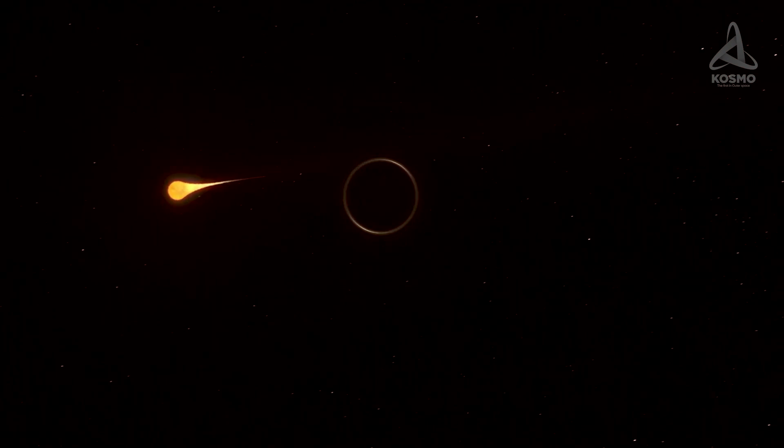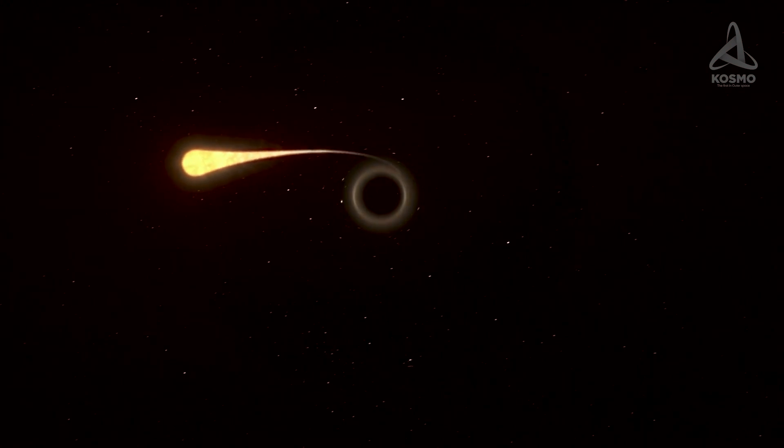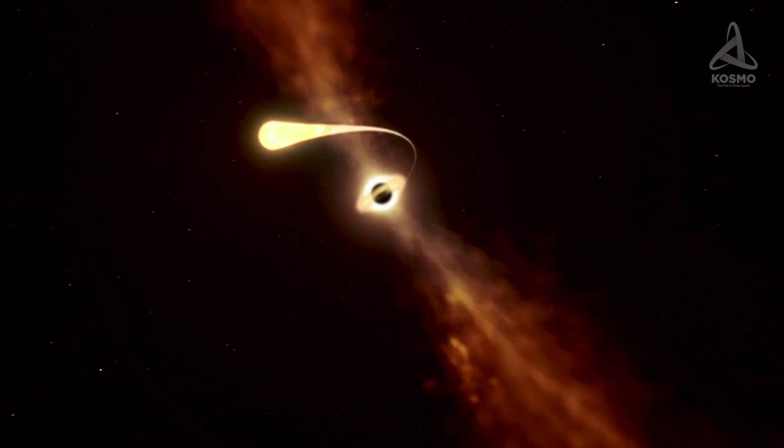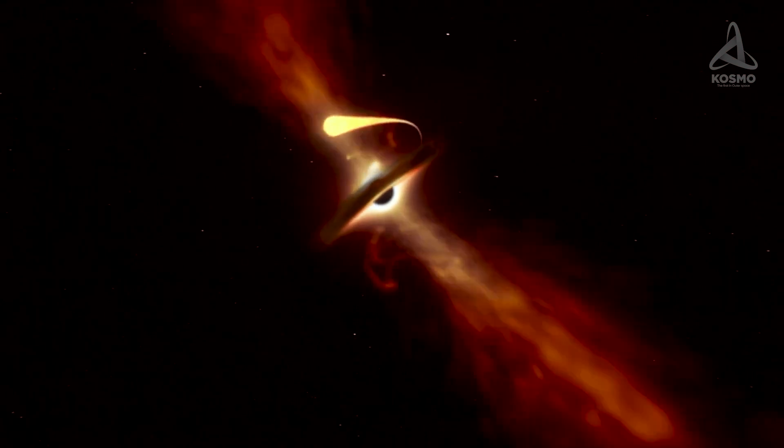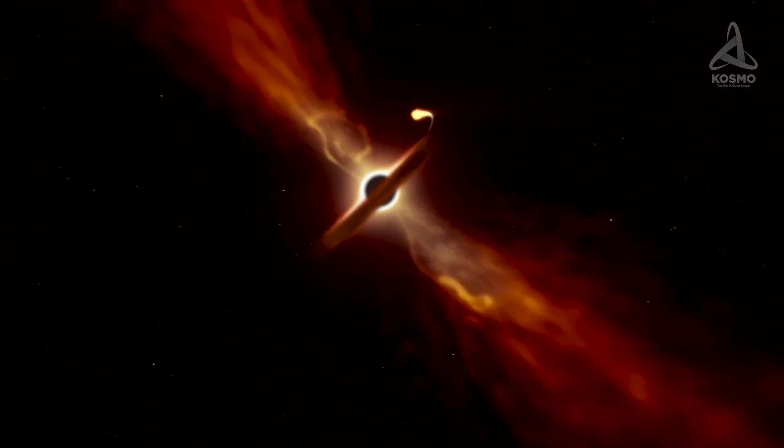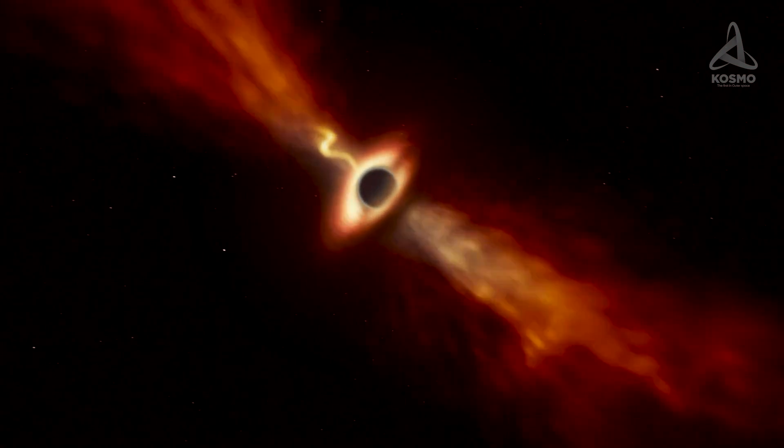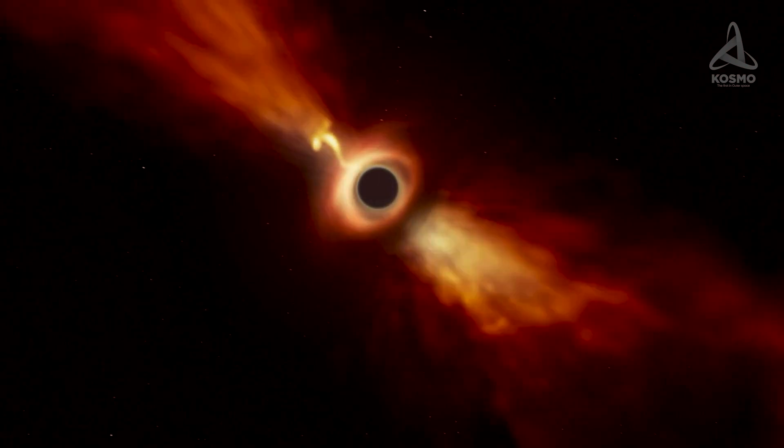By forming an accretion disk, it will continue to attract matter all around it and suck it in. There are more collisions and merges to come for the newly formed black hole, but in the end, all matter around it will be absorbed, and the growth of the black hole will first slow down and then cease completely, with nothing else to feed on.